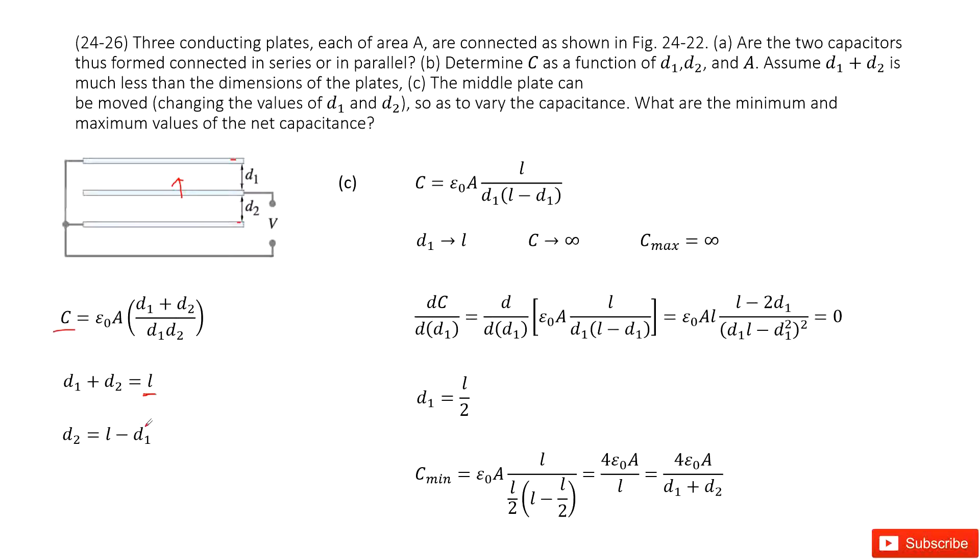So we write D2 as L minus D1. L is a constant. We input L inside and get the function for C as a function of D1. So we look at this function.